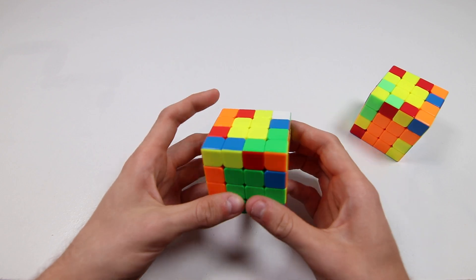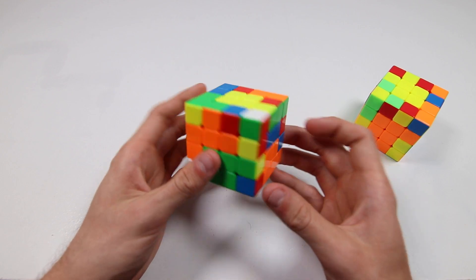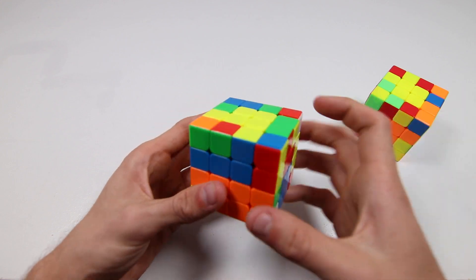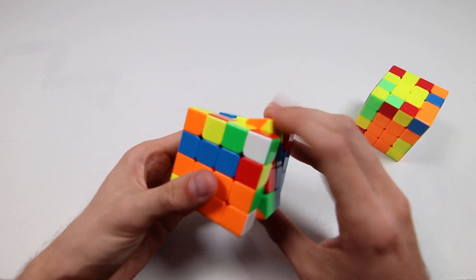And this is for slicing with a u and then ending with a u prime. So if you slice starting with u, you can get that five mover and then just finish like normal.